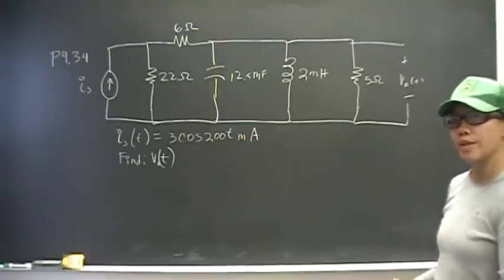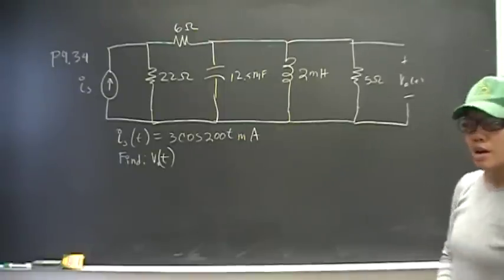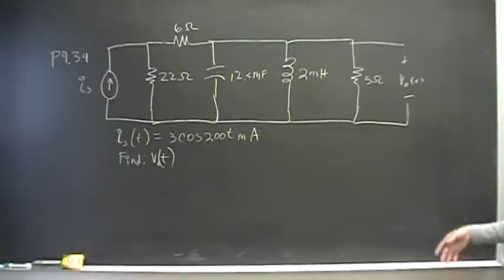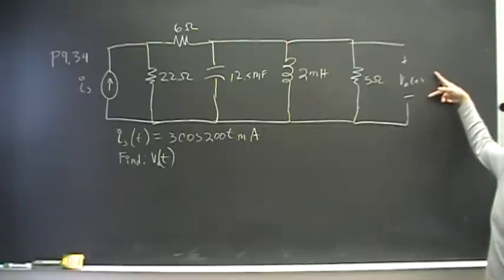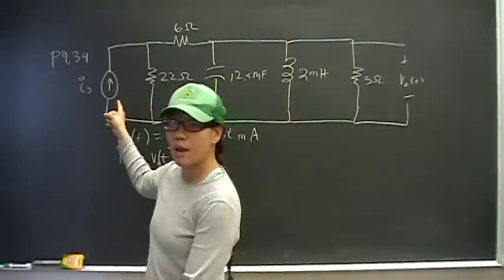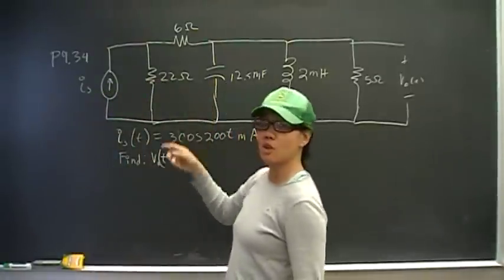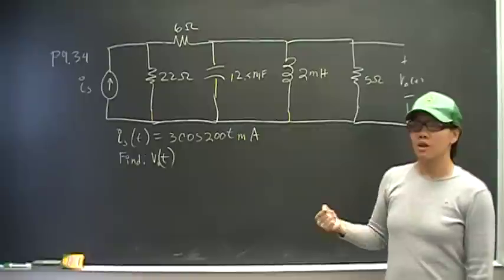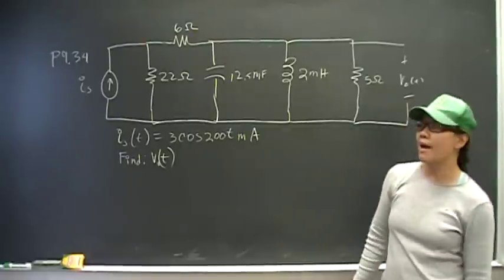If you don't know where to start, then start with what you're trying to find. We're trying to find voltage. We have current. So somehow we have to get current in terms of voltage. And how can we do that? What are some of the tools you have?